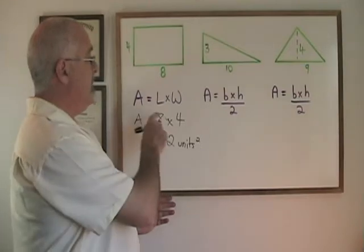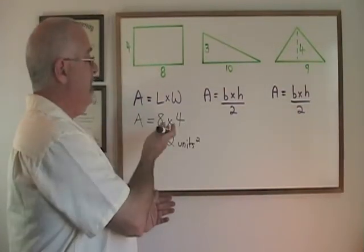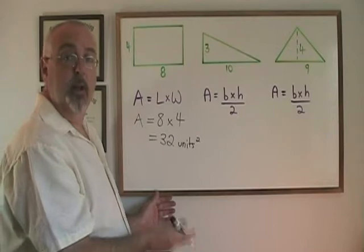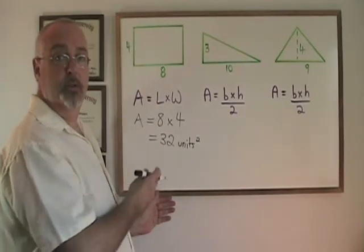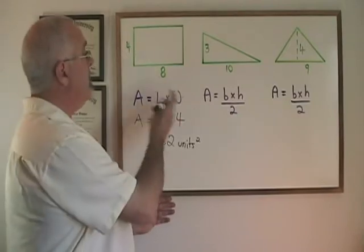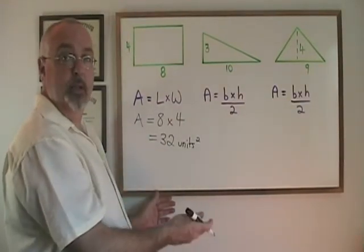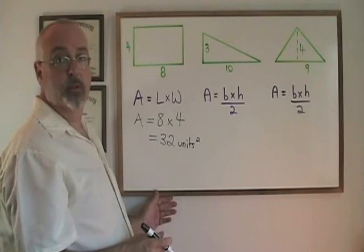If I had used the 4 as the length and the 8 as the width, I would have been doing 4 times 8 and I still would have gotten 32. And this is why it doesn't matter which is which when you are using terminology for your rectangle. Base times height would still also give 8 times 4 or 4 times 8 and an answer of 32 units squared.